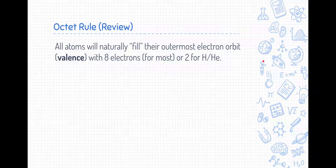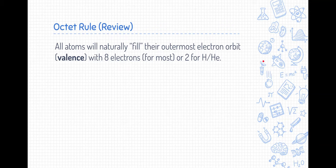And it's called the octet rule because, for the most part, eight is the maximum number of electrons that fill that outermost shell, unless it's the very innermost shell, which is two, typically for hydrogen and helium.